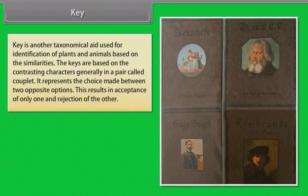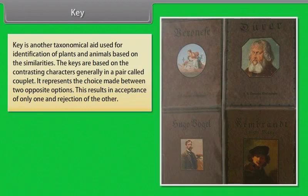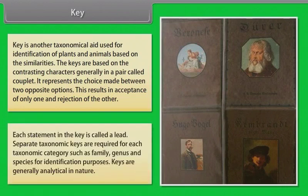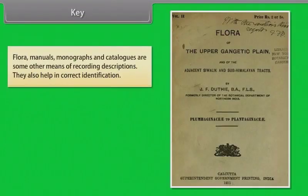A key is a taxonomical aid used for identification of plants and animals based on similarities. Keys are based on contrasting characters generally in pairs called couplets. It represents the choice made between two opposite options, resulting in acceptance of only one and rejection of the other. Each statement in the key is called a lead. Separate taxonomic keys are required for each taxonomic category such as family, genus and species. Flora, manuals, monographs and catalogues are some other means of recording descriptions that also help in correct identification.